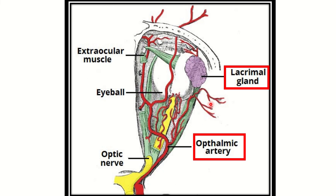The lacrimal gland is supplied by branches arising from the ophthalmic artery. So the lacrimal apparatus is supplied by the ophthalmic artery. The ophthalmic artery branches from the internal carotid artery and passes through the optic canal together with the optic nerve.